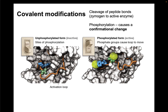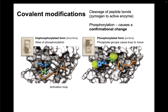The other type of interaction to discuss is covalent modifications, which can happen two ways. First, the enzyme can be made in an inactive form called a zymogen. Other enzymes can come along and cleave peptide bonds in part of the protein, making the protein smaller, and the enzyme becomes active. An example of this is trypsin — a protein that degrades other proteins — which is made in an inactive form that has to be activated.